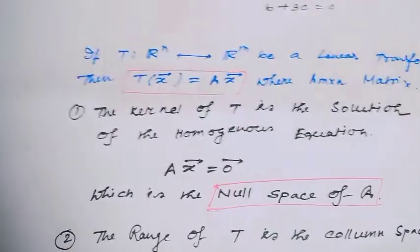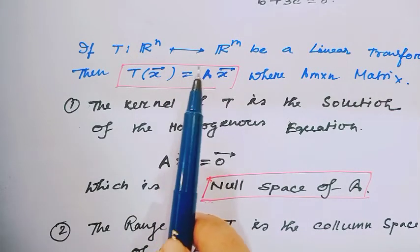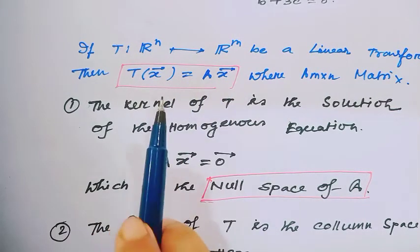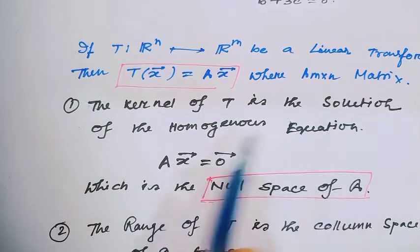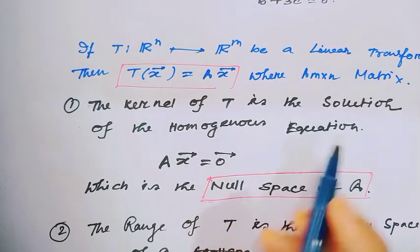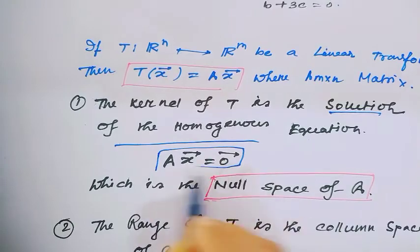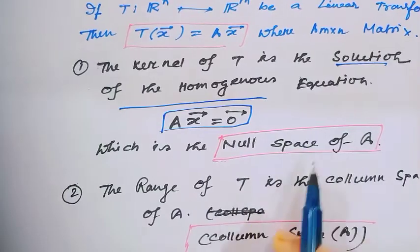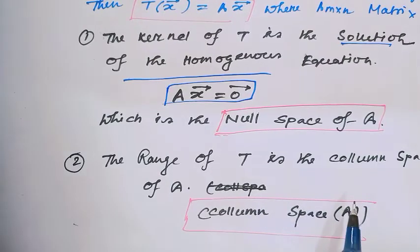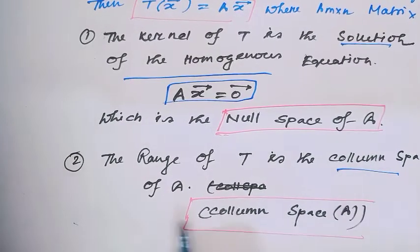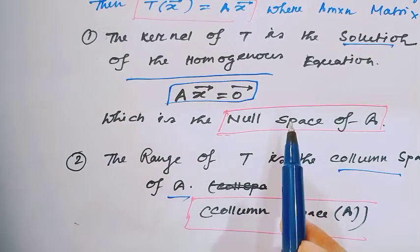From my earlier video, if T is a linear transformation from Rn to Rm such that T(x) = Ax where A is any m×n matrix, then the kernel of T is the solution of the homogeneous equation Ax = 0, which is the null space of matrix A, and the range of T is the column space of matrix A. Now I will apply this.